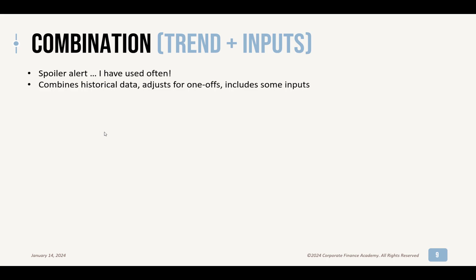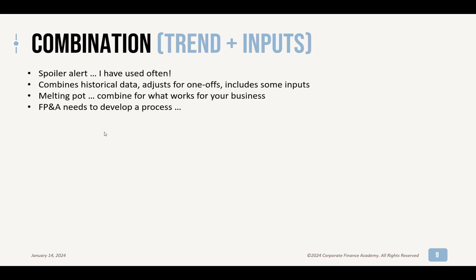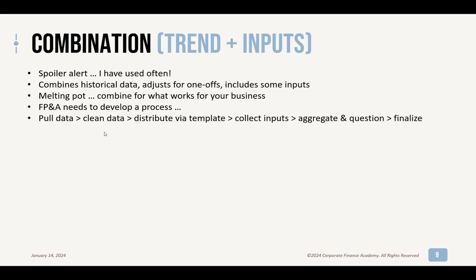This is where you're using historicals and some inputs — a little bit of trending and a little bit of bottoms-up. What this does is combine historical data, adjust for one-offs you know about that were throwing off your trending, and get some inputs from customer intelligence and your sales team. It's a little bit of a melting pot — you want to combine what works for your business. The FP&A team really needs to develop a process: pull data, clean it, create a template with what you think the forecast would be based on a few factors, send it out to the sales team, they fill it out, you collect all the inputs, aggregate it, have a little back-and-forth with the sales team, then finalize it.